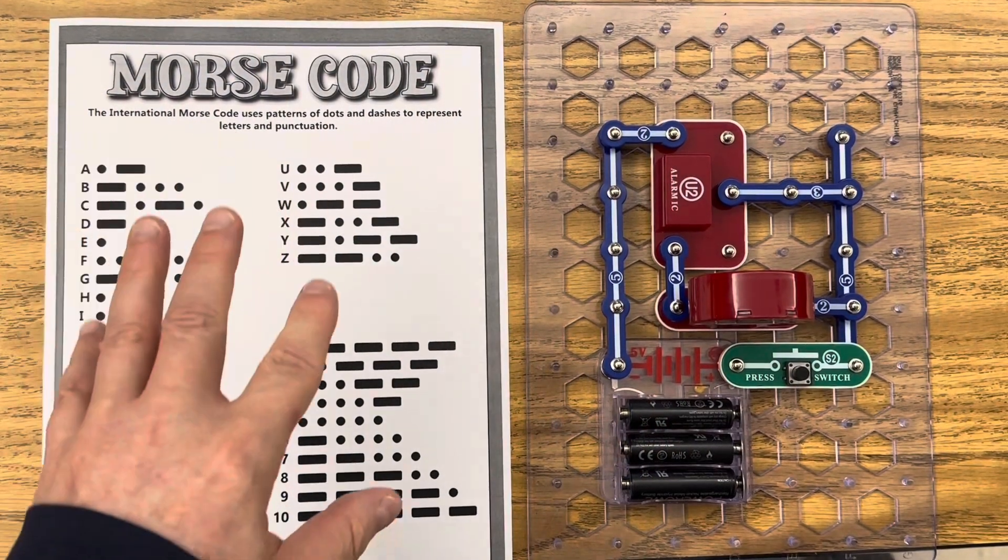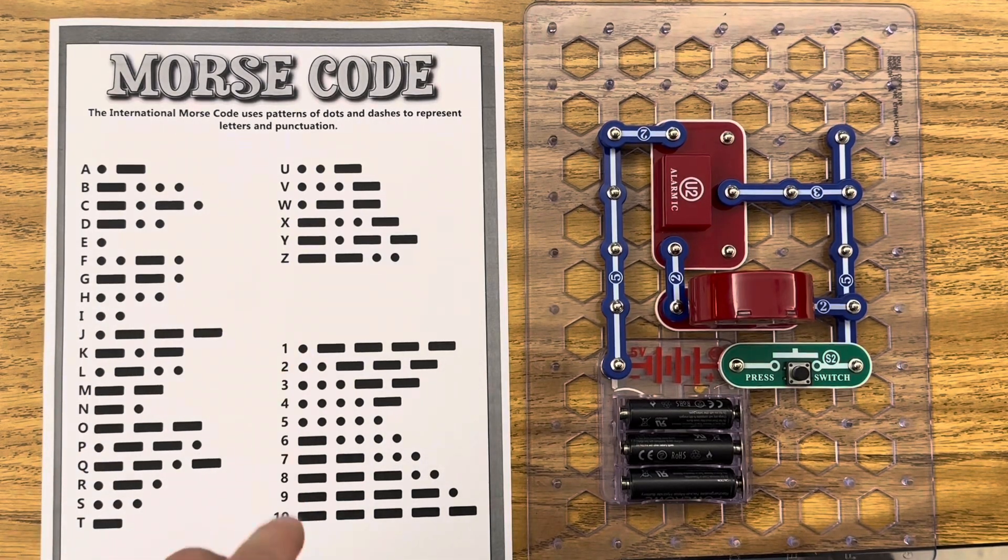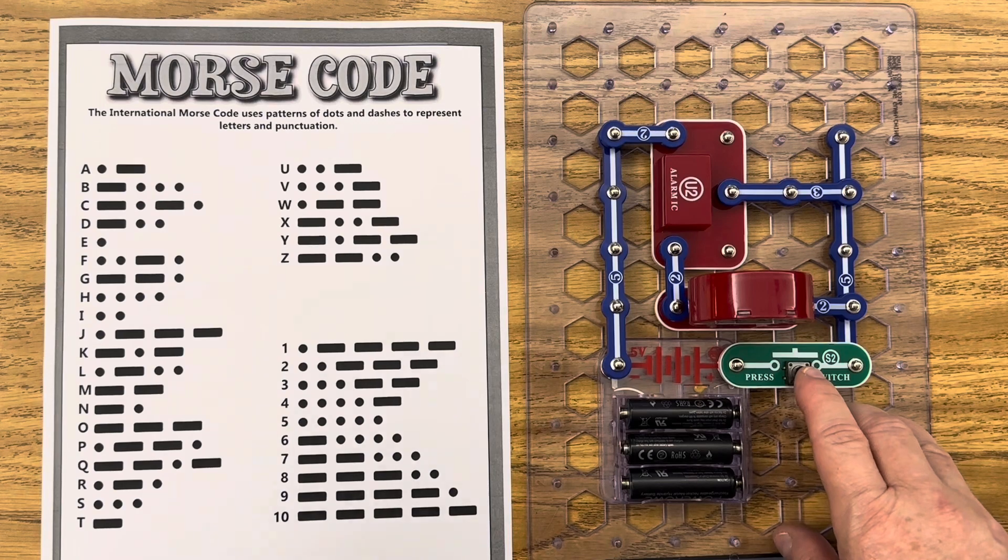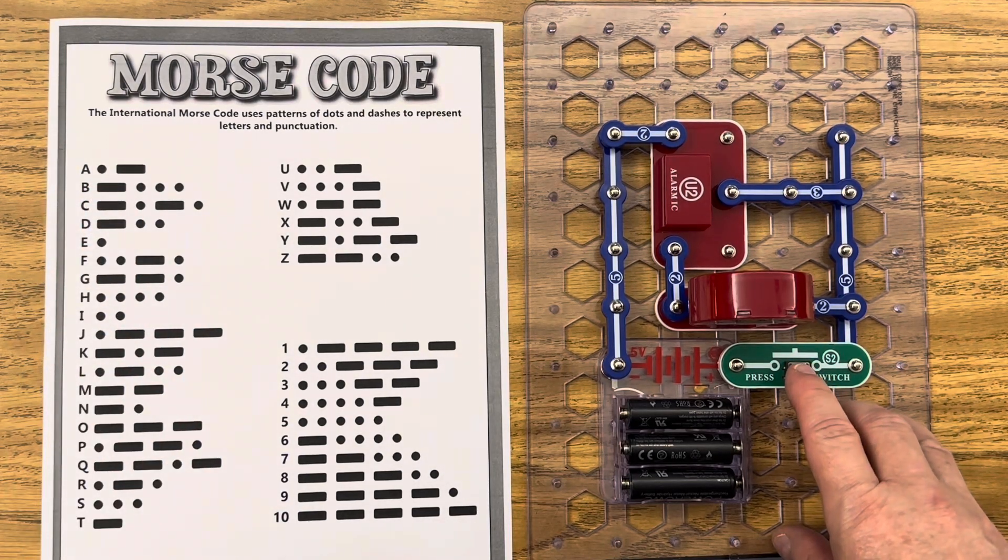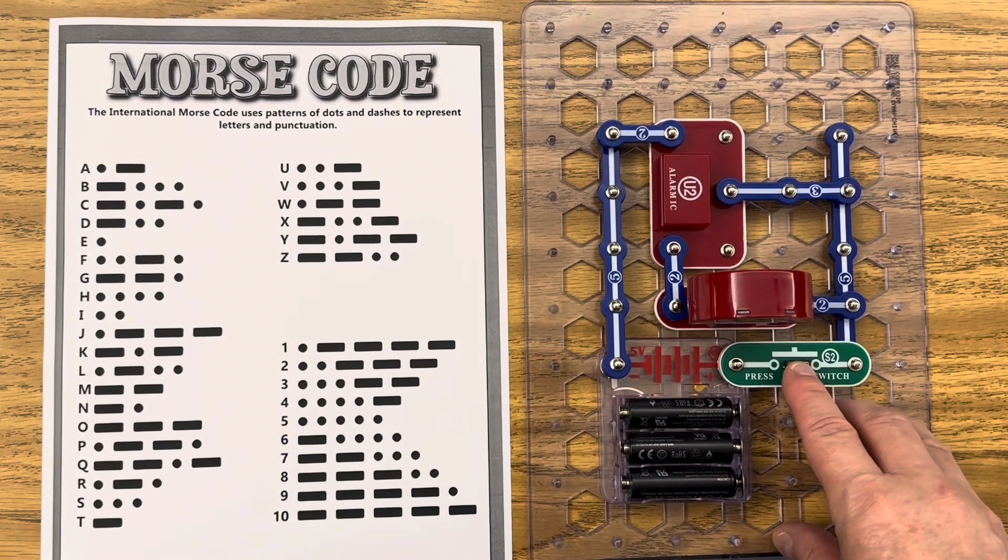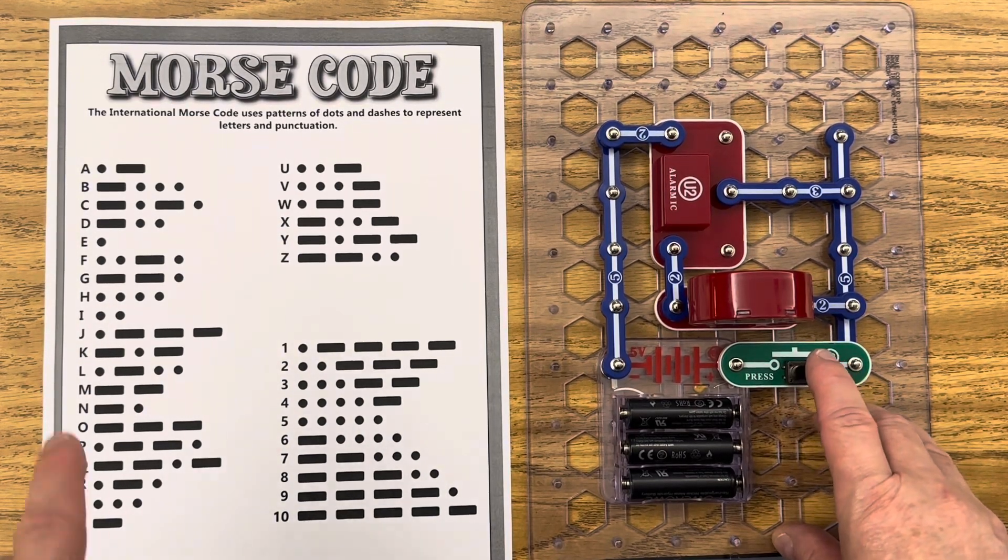So here you can see the Morse code with dots and dashes and we can emulate that by how long we hold down the switch. So for the letter A you'll just be, or for the letter B it'd be, or for the letter C.